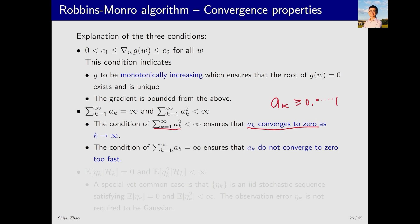The other condition, that the sum of a_k equals infinity, implies that a_k should not converge to zero too fast. For example, if a_k converges to zero within two steps and remains zero afterward, the sum would not be infinite.